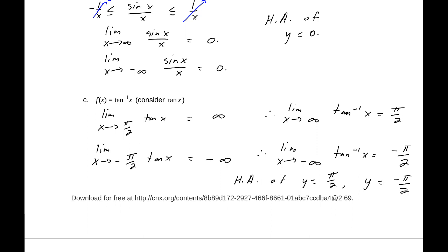What this means is that if you tell me you want the function to be very close to π/2, or negative π/2, I can give you an x value and say go out this far and the function will be this close. So when we come down to defining what this means very precisely — the formal definition — that's what it means: you tell me how close you want it to be, and I'll tell you how far to go.